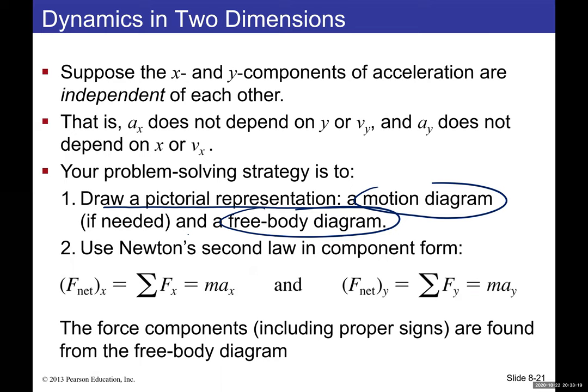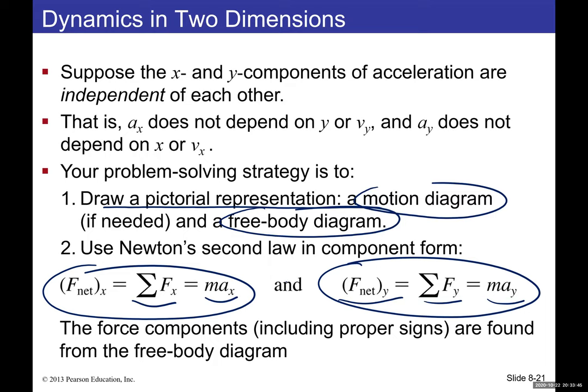Newton's second law gives us net force in the x direction equals mass times horizontal acceleration, and net force in the y direction equals mass times vertical acceleration. We completely separate horizontal and vertical forces, including their components, with correct signs. The free body diagram helps verify whether forces are horizontal or vertical.